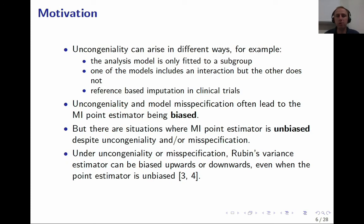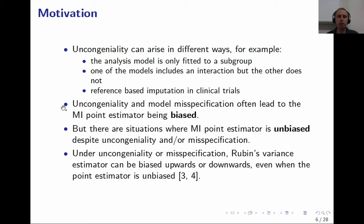Uncongeniality can arise in different ways. The analysis model could be fitted to just a subgroup of those used in the imputation process. One of the models — the imputation or analysis model — could include an interaction but the other does not. A third example, which I'm going to discuss in the simulations, is so-called reference-based imputation for missing data due to dropout in clinical trials.